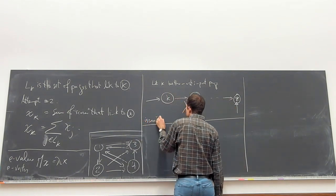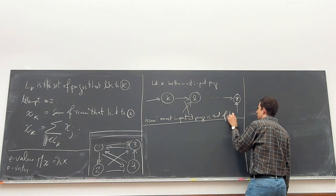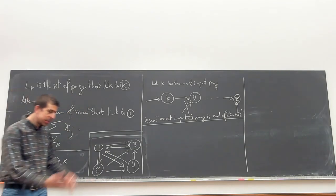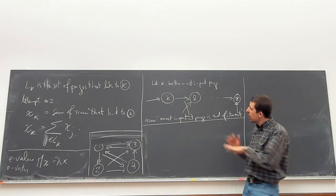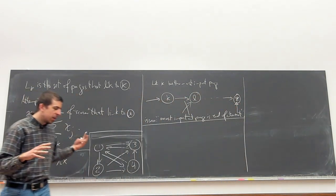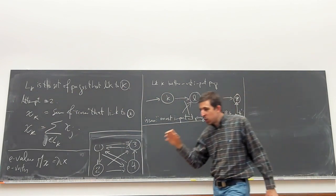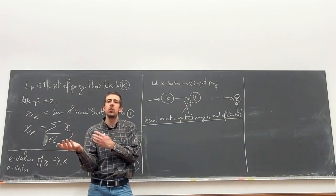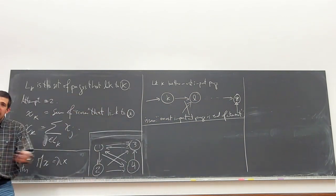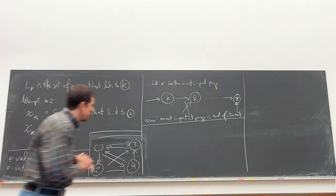Someone in the lecture suggested taking the average of the scores instead — a nice suggestion. But the issue with the average is: if you're a page with many links to you and a certain score, and then a new unimportant page is born and links to you, it doesn't make sense that your score would go lower just because someone linked to you. If you take the average, that's exactly what happens — something less important connects to you and your score goes down. So that's why the average doesn't work.